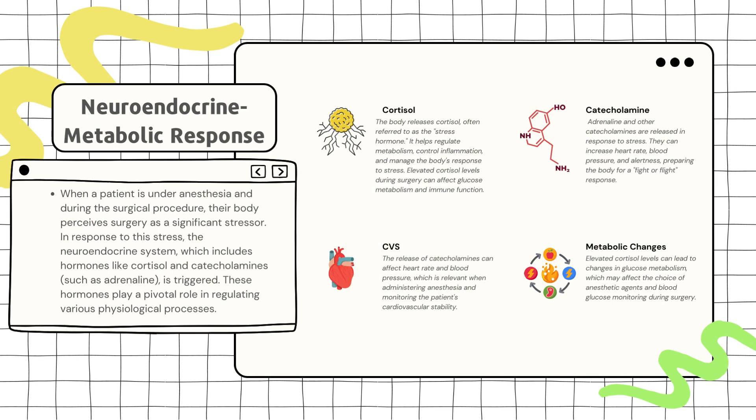The first component of the stress response involves the activation of the neuroendocrine system and metabolic processes in the body when a patient undergoes surgery. When a patient is under anesthesia and during the surgical procedure, their body perceives surgery as a significant stressor. In response to this stress, the neuroendocrine system, which includes hormones like cortisol and catecholamines such as adrenaline, is triggered.